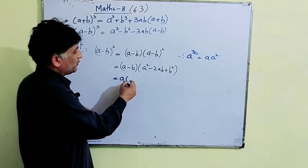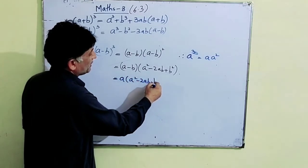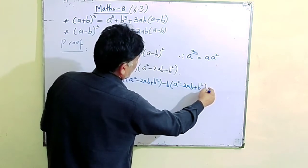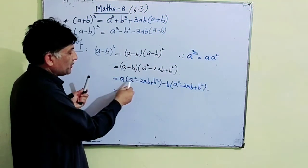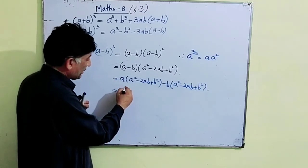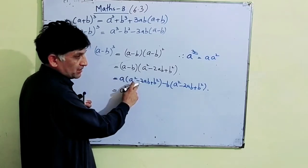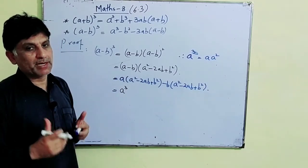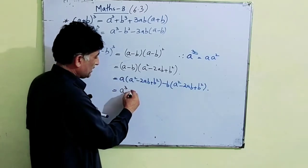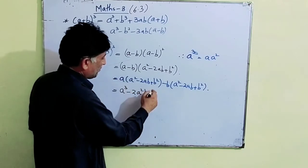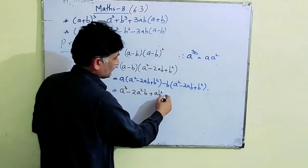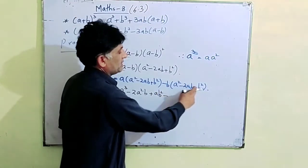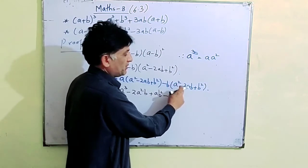Again, same method: a(a² - 2ab + b²) minus b(a² - 2ab + b²). Remember, when the sign outside the bracket is minus, the signs inside will change when the bracket is opened. So: a³ - 2a²b + ab². Then signs change: minus a²b, plus 2ab², minus b³.